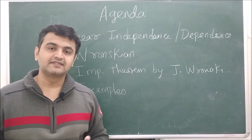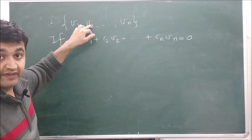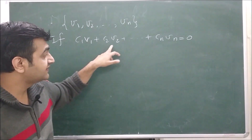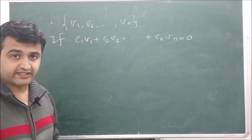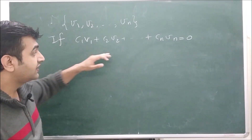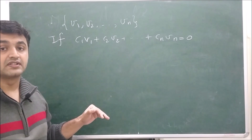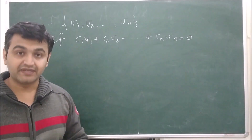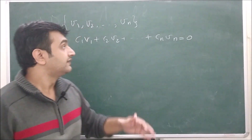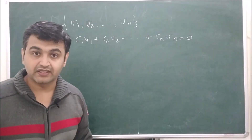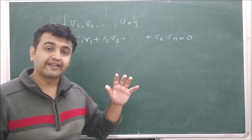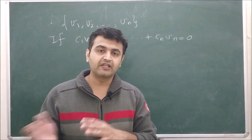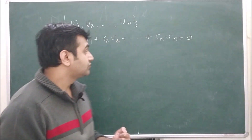Let's see what we mean by independence and dependence of vectors. Suppose you have n vectors v1 to vn. You take their linear combination equal to zero, where c1, c2, ..., cn are real scalars. If all the constants are zero, the vectors are linearly independent. If even some scalar is non-zero, the vectors are linearly dependent — meaning one vector can be obtained from another.